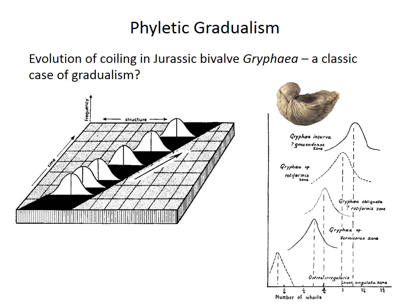So under gradual change — this phyletic gradualism — the midpoint of that bell curve will progressively shift in one direction as a result of natural selection, as illustrated again in this figure on the left.